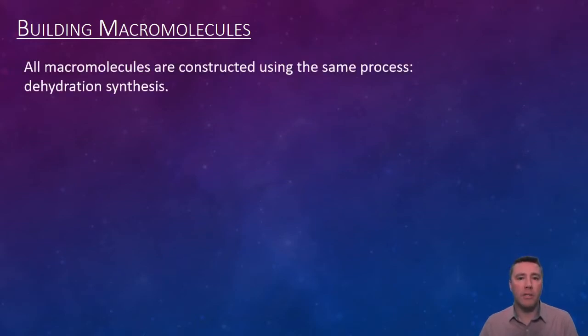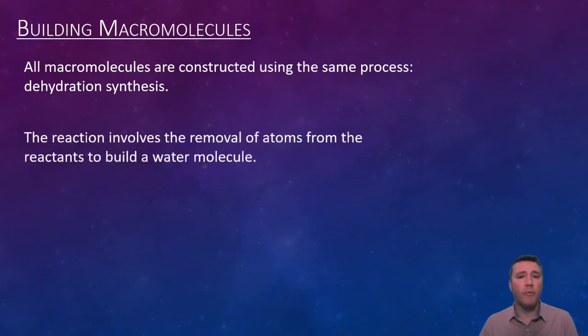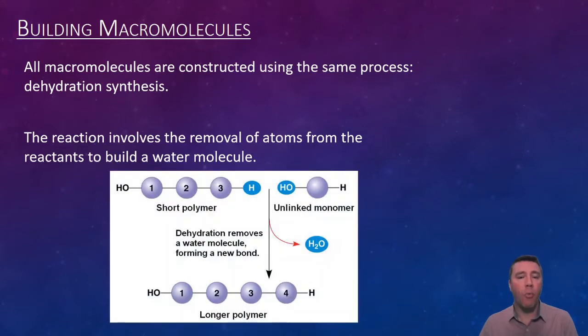Regardless of the category of macromolecule in question, all are constructed using the same chemical process. This process is called dehydration synthesis. The reason for this name is because it involves the removal of atoms from the smaller reactant molecules in order to form water and build a larger product molecule. We will see specific examples of this reaction when we explore the individual macromolecules one by one.